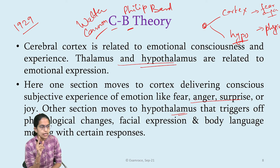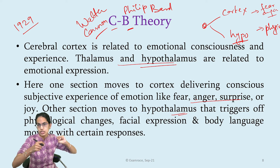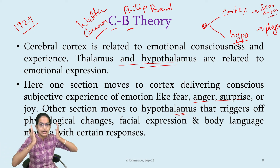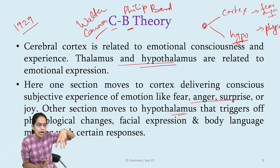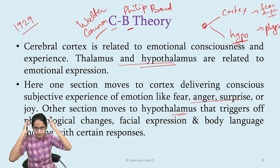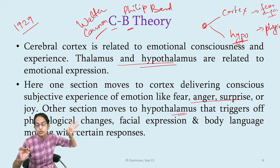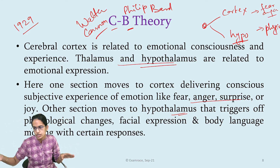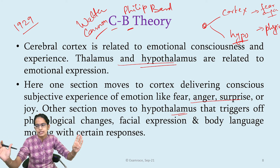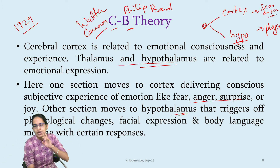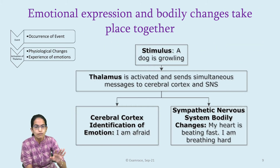The James-Lange theory talked about a stimulus being perceived, changing the physiological responses, and this bringing in an emotion. However, under the Cannon-Bard theory, it was said that once there is a stimulus, both centers of the brain get activated — the cortex, which senses emotions like fear, anger, joy, and sadness, and the hypothalamus, which brings in physiological changes. The message is simultaneously conveyed to both, and these instructions are responsible for any kind of emotional arousal.